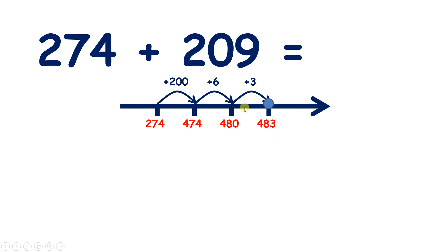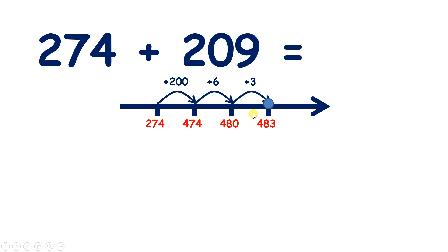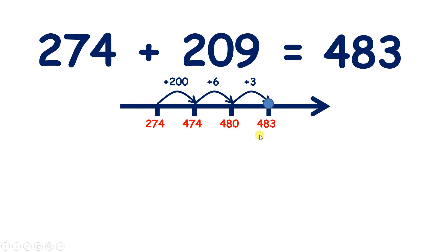So we added six, and then we added another three, so we added nine altogether. So 274 plus 209 equals 483.